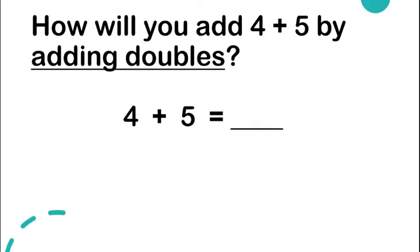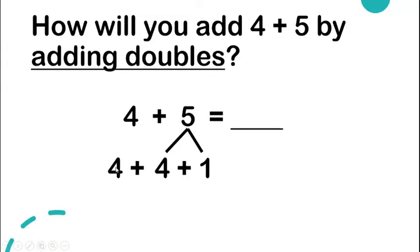Let's try something a bit harder. How will you add four plus five by using doubles? We have the addition sentence four plus five is equal to blank. Four and five are different addends, so to use doubles, we can break five into four plus one. Now we can add four plus four, which is eight, plus one, which gives us nine.